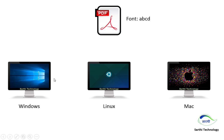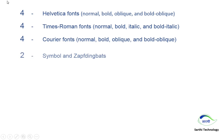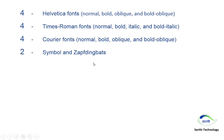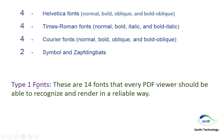To overcome this problem, there are 14 standard fonts: for Helvetica that is normal, bold, oblique, and bold oblique; four Times Roman fonts — normal, bold, italic, bold italic; four Courier fonts; and two other fonts — Symbol and one more. These are the 14 fonts called Type 1 fonts. These are 14 fonts that every PDF should be able to recognize and render in a reliable way.